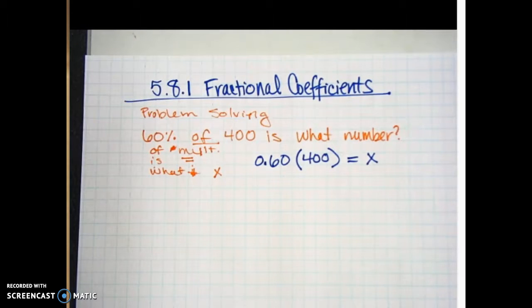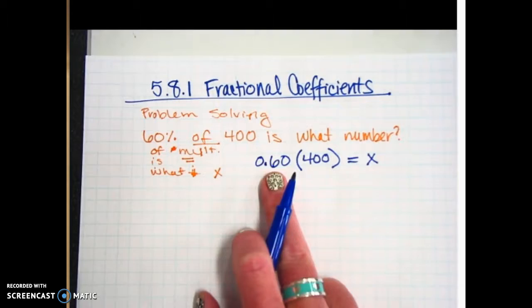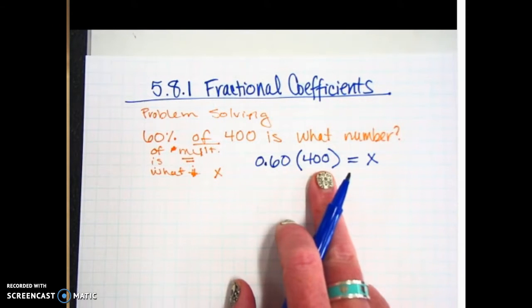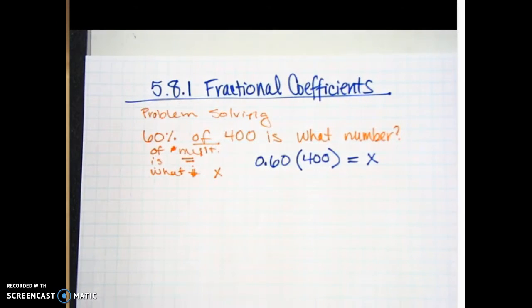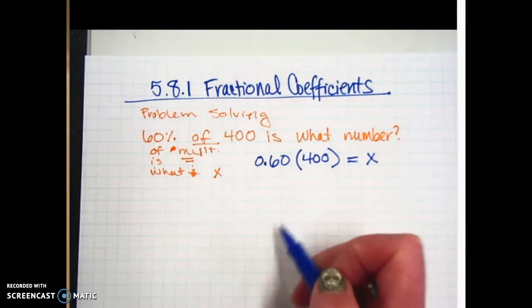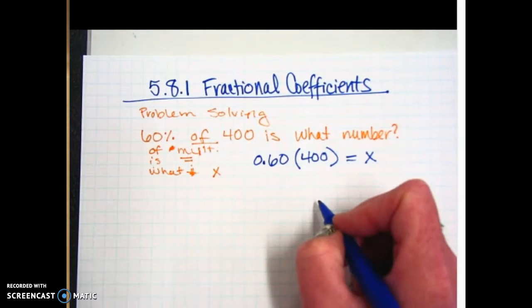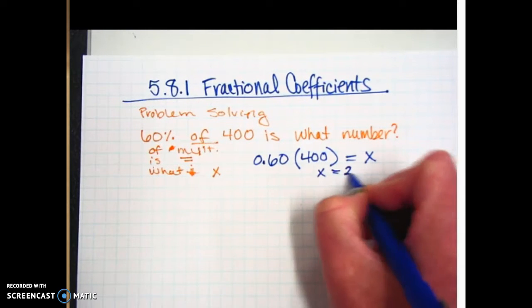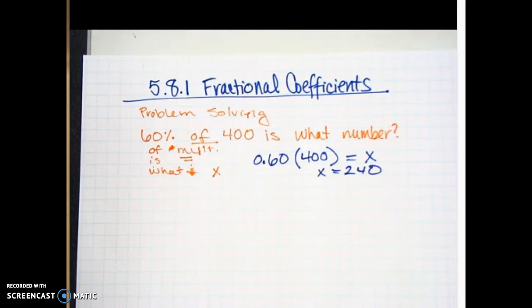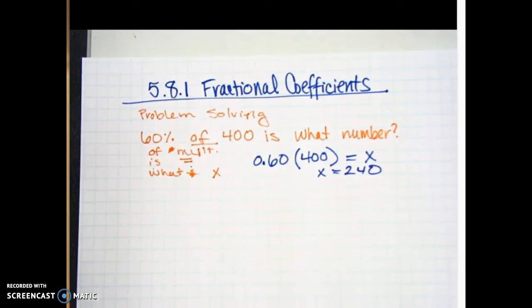And then the variable is going to move around in that math sentence. Sometimes it'll be the percent. Sometimes it'll be the 'of' number. But basically, just take your calculator. Multiply 0.6 times 400. I got 240.